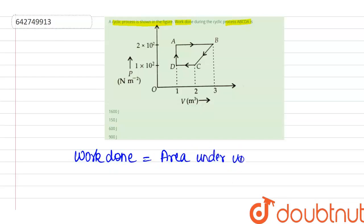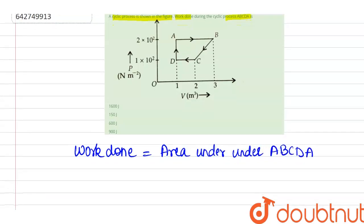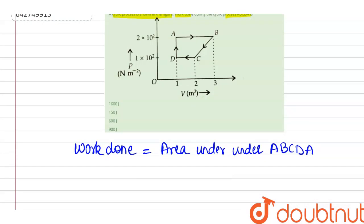Which will be area under the process ABCDA. So if I am looking at that process ABCDA, it's nothing but a trapezium. So I can find out the area of trapezium,